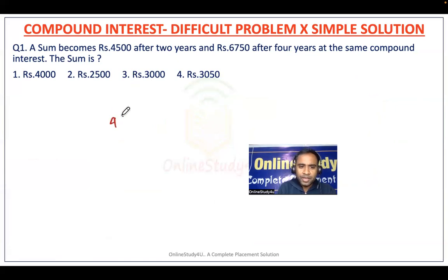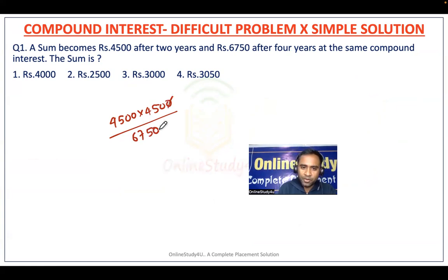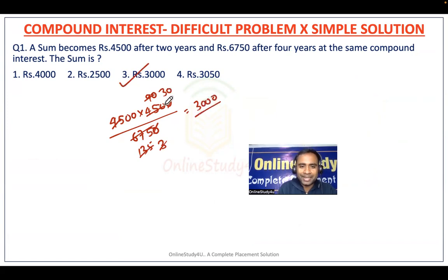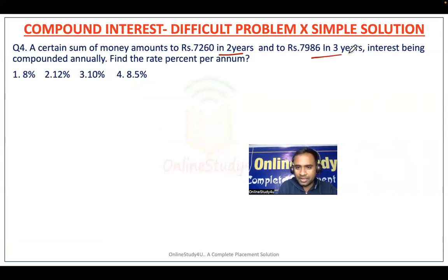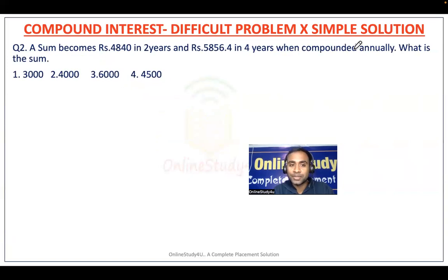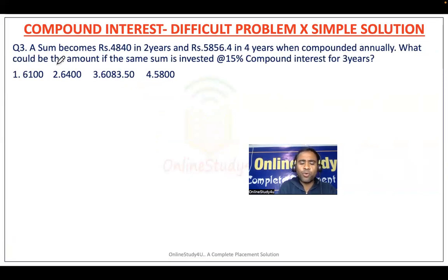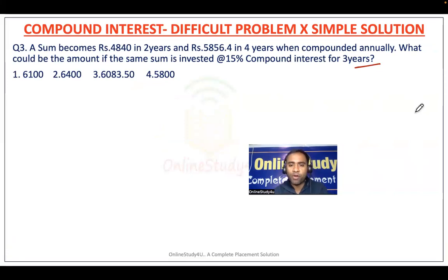Now, if the same question comes in your exam — a sum becomes 4500 after two years and 6750 after four years, what is the sum? — you can do the calculation and get 3000. Many of you might ask: will this work on other problems? What if it is not four years? I have a problem where it is two years and three years. What if they are not asking for the sum but something else? I have that too: a sum becomes this, what could be the amount if the same sum is invested at 15% per annum compound interest for three years?